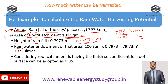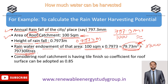The rainwater endowment is calculated as: catchment area (100 m²) multiplied by the height of rainfall (0.7973 m), giving 79.73 cubic meters. Multiplying by 1000 to convert to liters, we get 79,730 liters. This is the overall rainwater endowment for the Delhi region for this calculation.